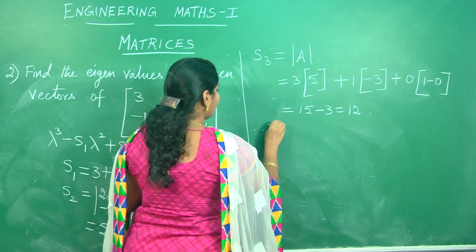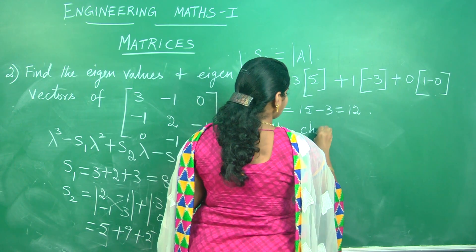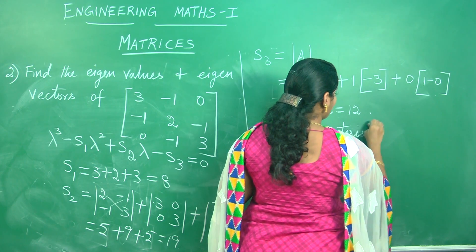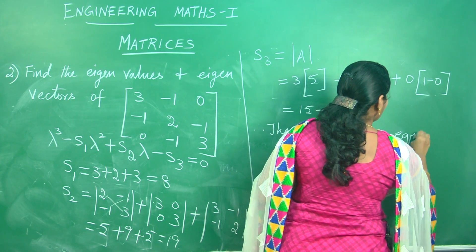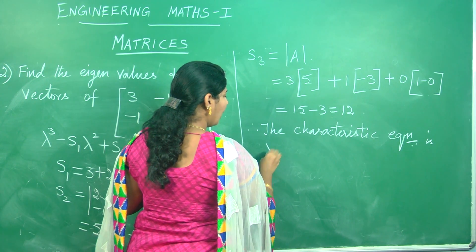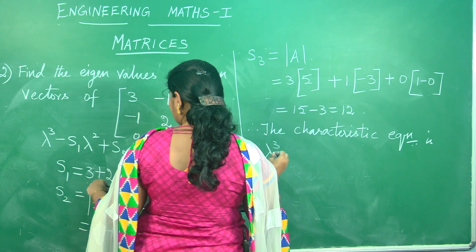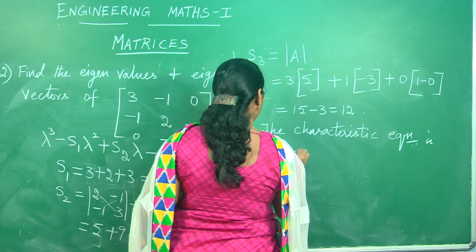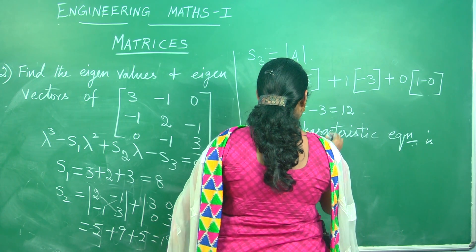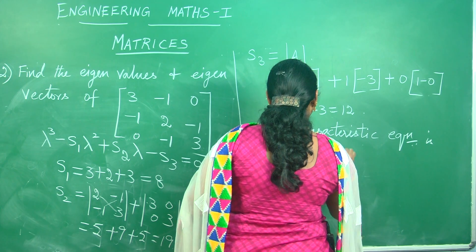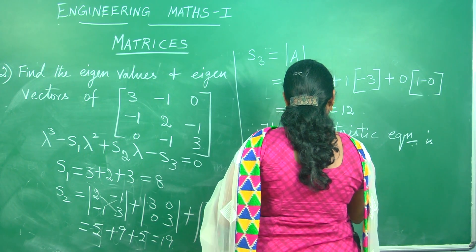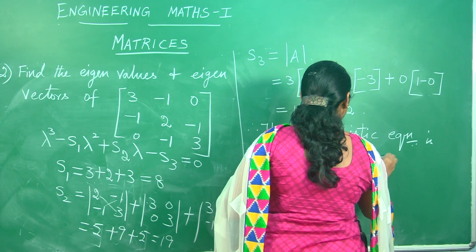Therefore we have the characteristic equation. The characteristic equation is found by substituting in the formula: lambda cubed minus S1 lambda squared, which is minus 8 lambda squared, plus S2, which is plus 19 lambda, minus S3, which gives the characteristic equation minus 12 equals 0.